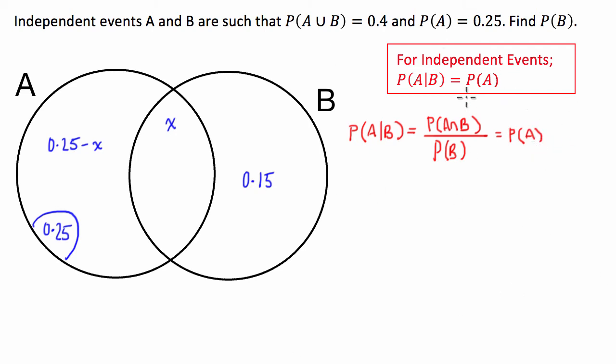So what we're going to do from here is we're going to substitute in information that we know. So the probability of A and B occurring in our situation is X. And this is going to be divided by the probability of B occurring, which is 0.15 plus X. And that has to be equal to the probability of A, which is 0.25. So from here, what we're going to do is we're just going to use algebra to solve for X. So I'm going to first take the denominator over to the other side, and I'm going to have X is equal to 0.25 times 0.15 plus X, which is equal to 0.0375 plus 0.25X.